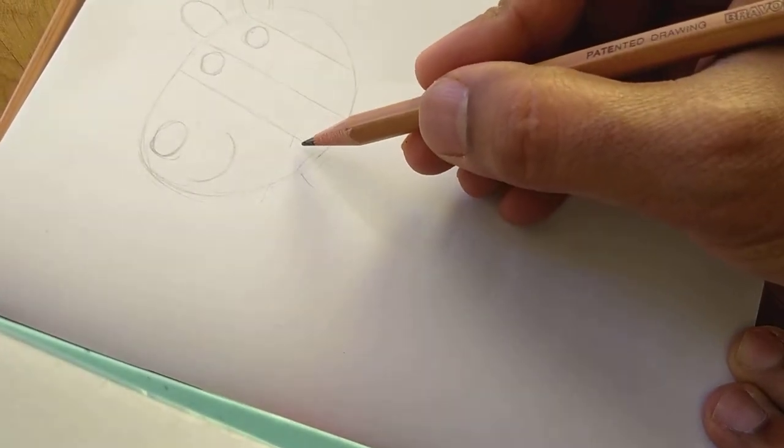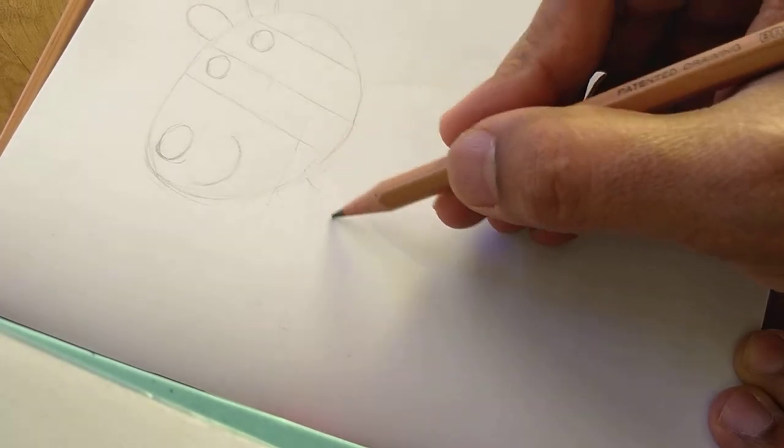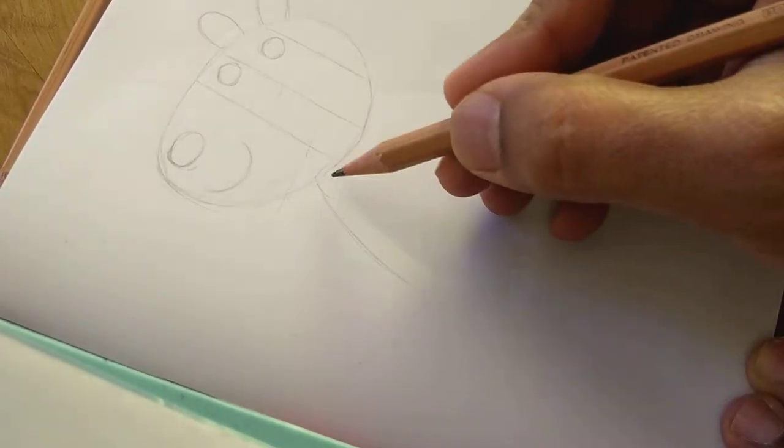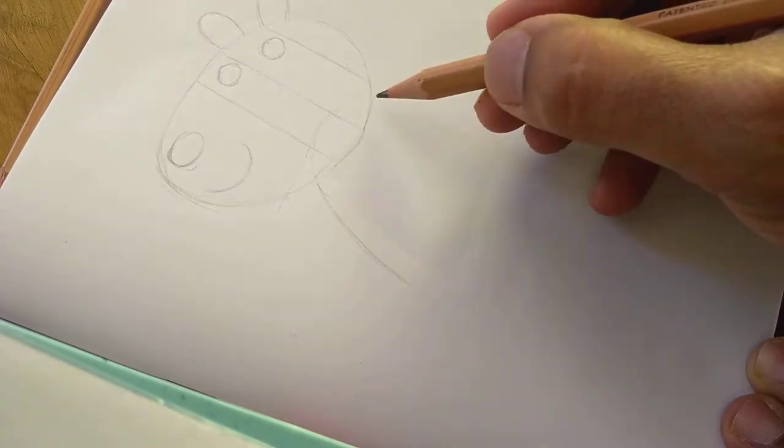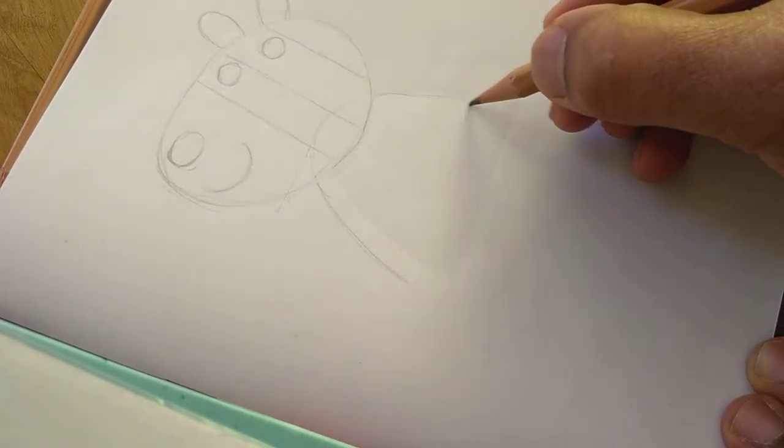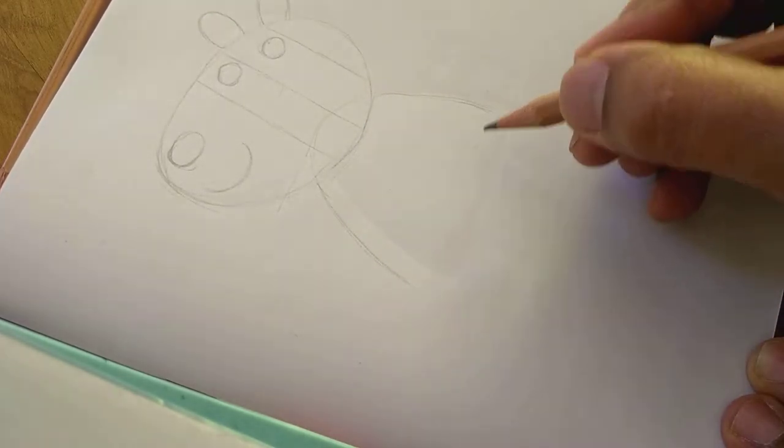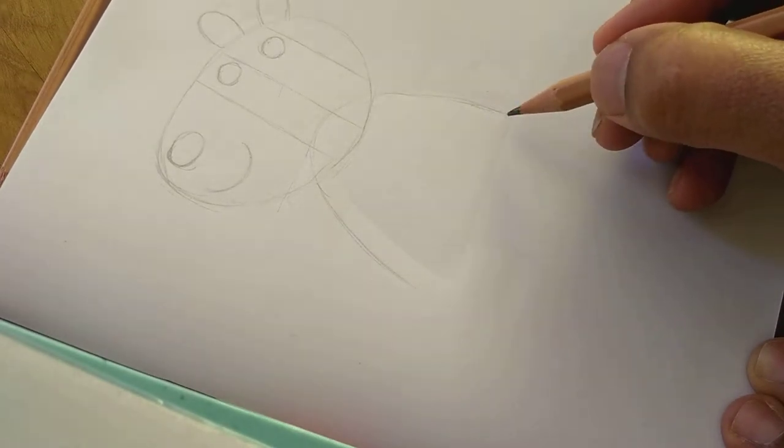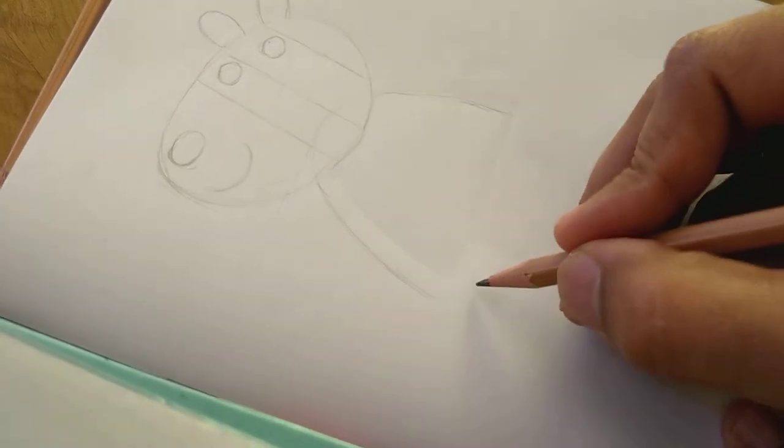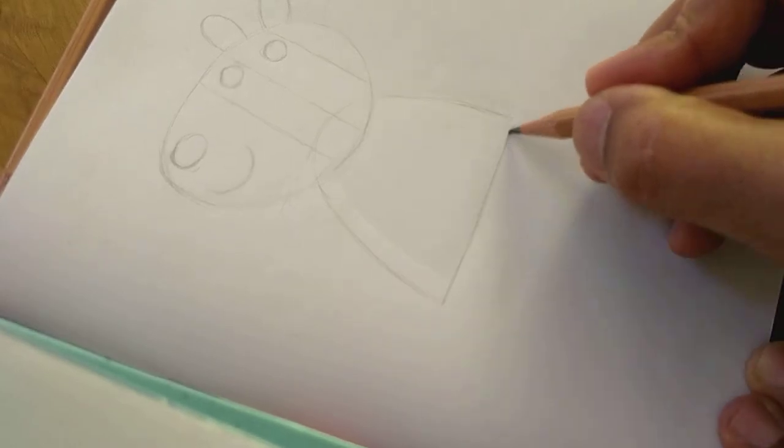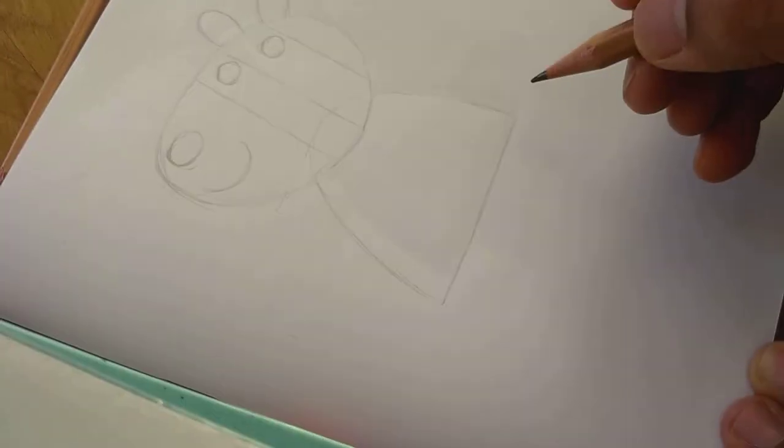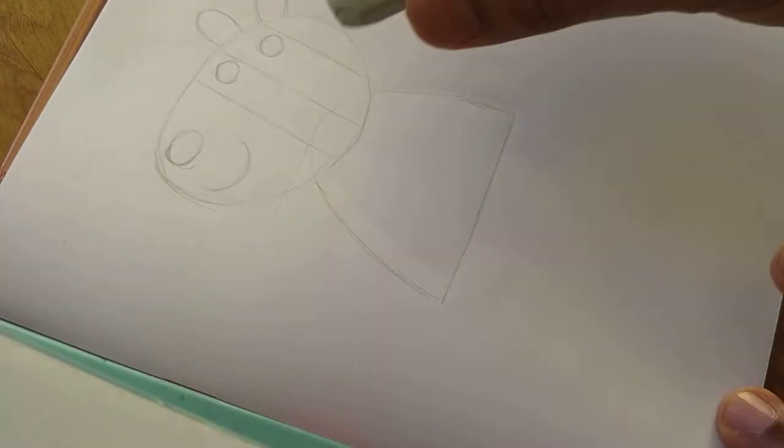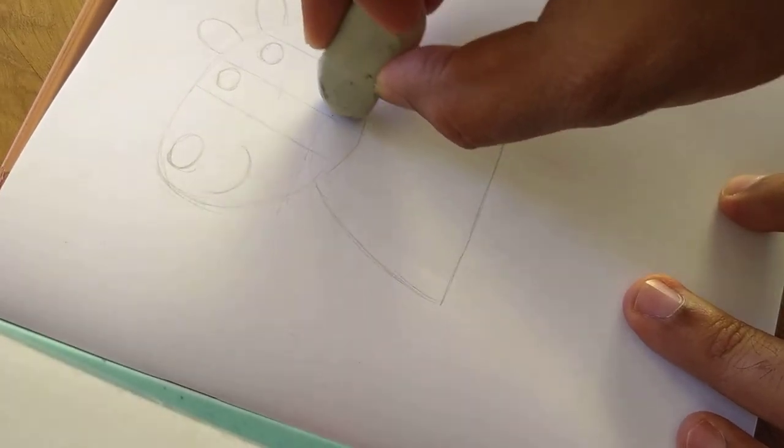From here you need to draw a mountain shape with a dress. You can join this. You should rub the extra portion, this way.